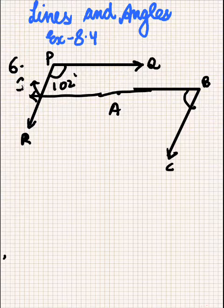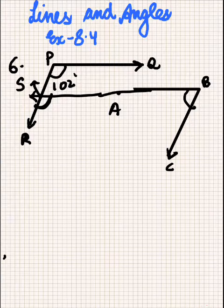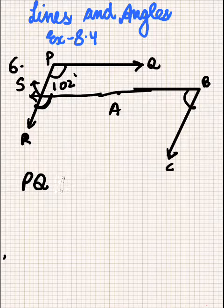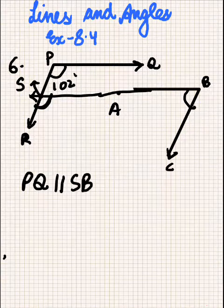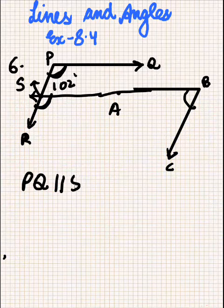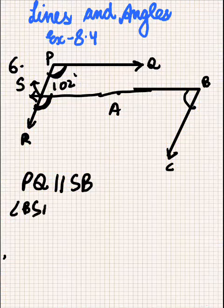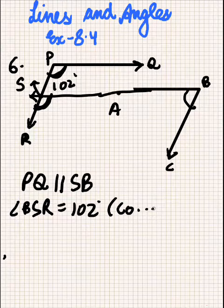Since PQ is parallel to AB, this line will be parallel to SB because it has been extended. So this angle will be equal to that angle — angle BSR will be equal to 102 degrees because they are corresponding angles.